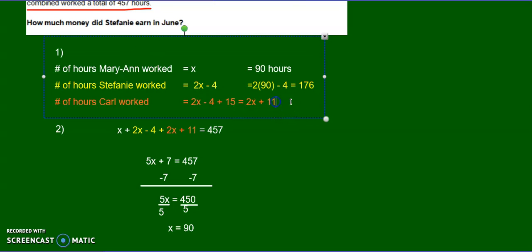And then how many hours did Carl work? Well, he worked 2 times 90 plus 11.